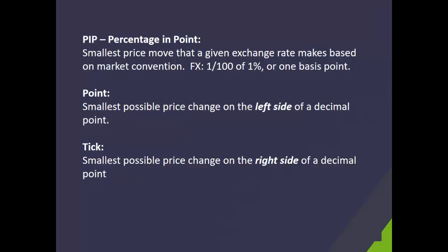The second term is point — the smallest possible price change on the left side of a decimal point. That originally comes from futures trading, but when you trade for example the DAX or a FTSE or S&P 500, you will be interested in the full point movements on the left side of a decimal point, and that's what we refer to as a point in trading.